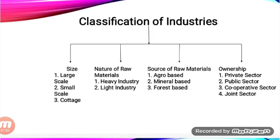The last basis is ownership. When an industry is owned by an individual it is private sector. When owned by the government it is public sector. When owned by both private and public it is joint sector, and when owned by a group of people it is cooperative sector.